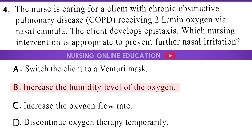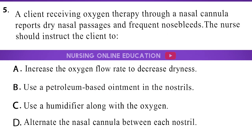The answer is option B: Increase the humidity level of the oxygen. A client receiving oxygen therapy through a nasal cannula reports dry nasal passages and frequent nosebleeds. The nurse should instruct the client to: A. Increase the oxygen flow rate to decrease dryness. B. Use a petroleum-based ointment in the nostrils. C. Use a humidifier along with the oxygen. D. Alternate the nasal cannula between each nostril.